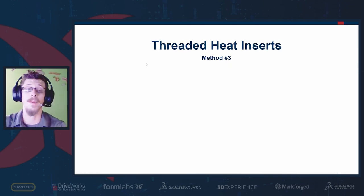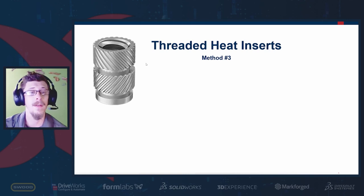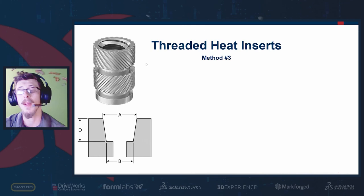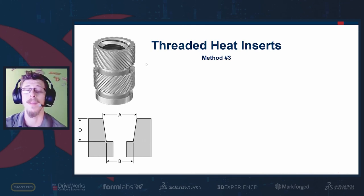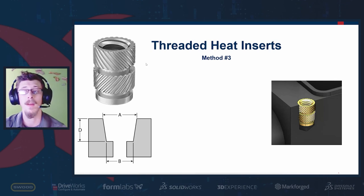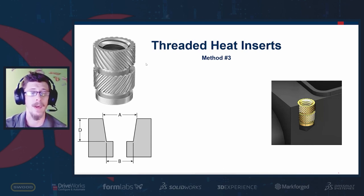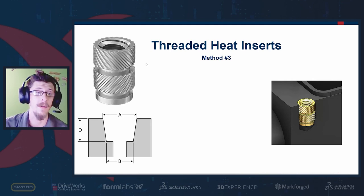Method three is threaded heat inserts, available from many online retailers. Make sure they're suited for plastic molded injection or 3D printing. Always follow the manufacturer's recommendations for tolerances and insertion because tolerances are usually unique to the build of the threaded insert. You need enough material for them to grip and fuse to — increase wall thickness in your print settings to ensure the insert grips without melting into the hollow infill cavities.